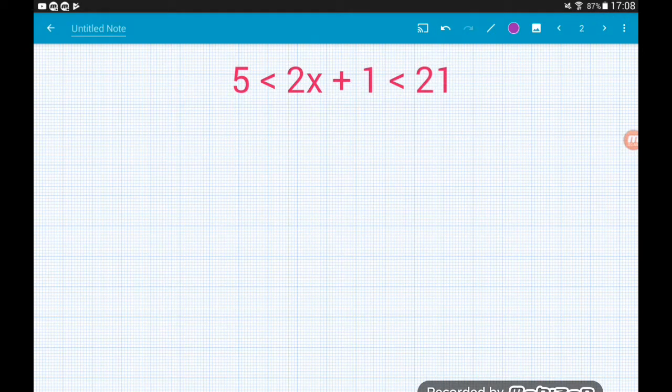So we want to solve the inequality 2x plus 1 is greater than 5 but is less than 21. So how do we do this? Well, we need to get x on its own in the middle of this inequality. So how would we normally get x on its own if we had 2x plus 1 was equal to something? Well, our first step would be to move the plus 1.